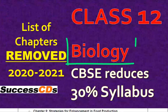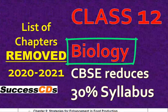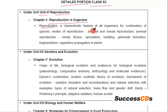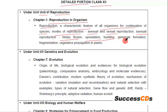Now let us see what topics have been deleted from class 12 Biology, unit-wise. From Unit 6, Reproduction, Chapter 1 — Reproduction in Organisms: reproduction as a characteristic feature of all organisms for continuation of species, modes of reproduction (asexual and sexual), and under asexual reproduction — binary fission, sporulation, budding, gemmule formation, fragmentation, and vegetative propagation. All of these are deleted.